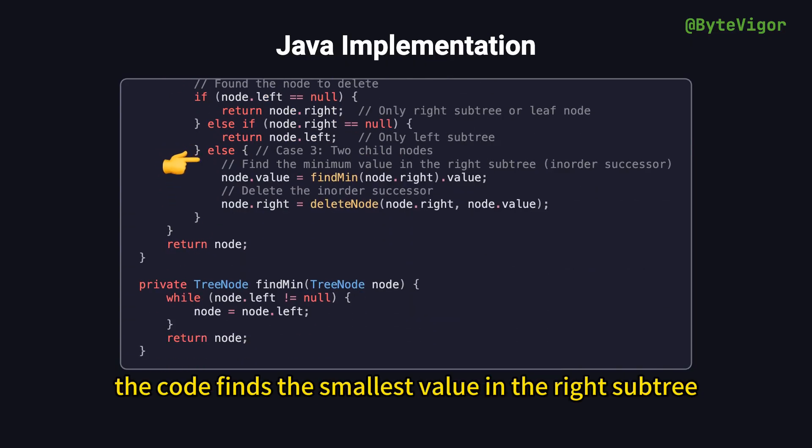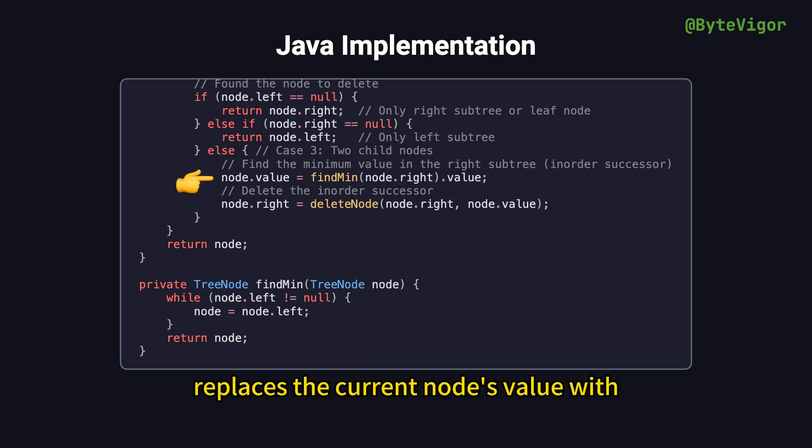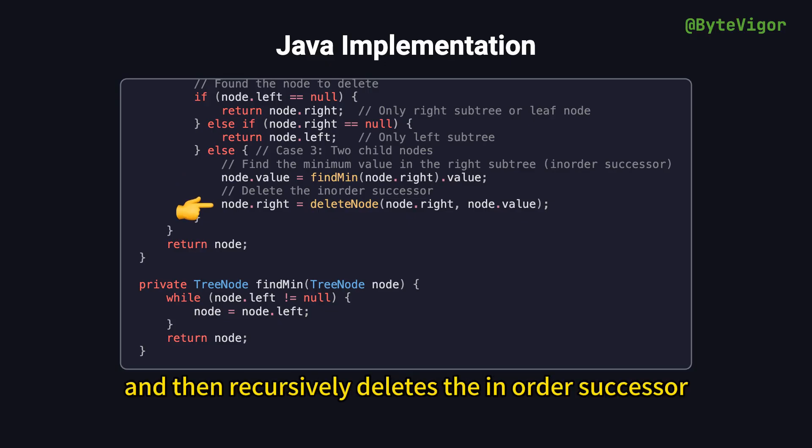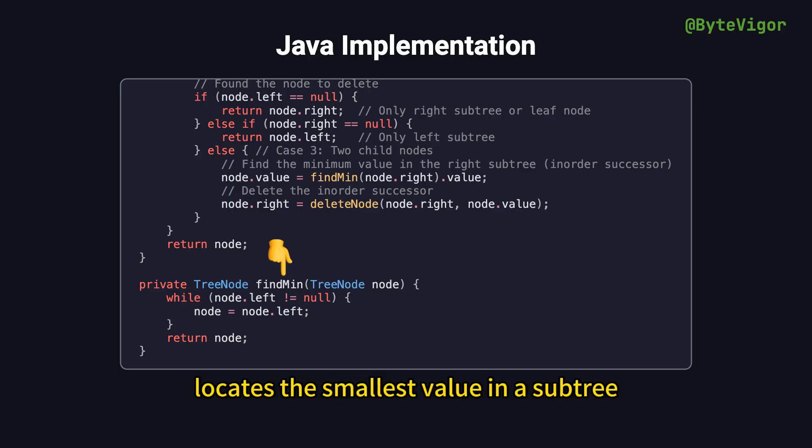If the target node has two children, the code finds the smallest value in the right subtree, the in-order successor, replaces the current node's value with this smallest value, and then recursively deletes the in-order successor. The helper function findMin locates the smallest value in a subtree by continuously moving to the leftmost node.